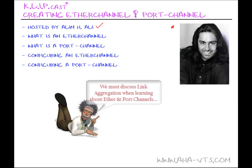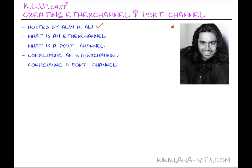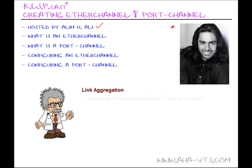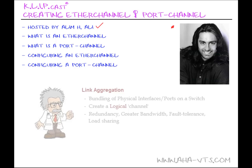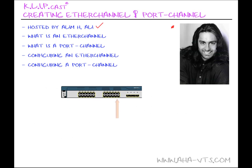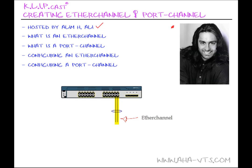When discussing EtherChannel and Port Channel, we must briefly talk about link aggregation, because these are what EtherChannel and Port Channel consist of. Link aggregation is the bundling of two or more physical interfaces or ports to create a logical channel for the purposes of redundancy, greater bandwidth and throughput, fault tolerance, and load sharing. For example, if I have two interfaces on a switch shown on the screen that are 100 megabits per second each, when bundled together to form an EtherChannel, the total bandwidth is 200 megabits per second.